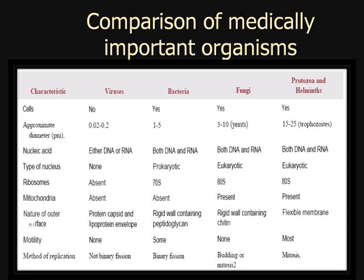For ribosomes: viruses have no ribosomes — neither 70S nor 80S. Bacteria have 70S ribosomes. Fungi have 80S ribosomes, and protozoa and helminths also have 80S ribosomes. For mitochondria: viruses have none, bacteria also have no mitochondria, but fungi have mitochondria present, and protozoa and helminths also have mitochondria present.